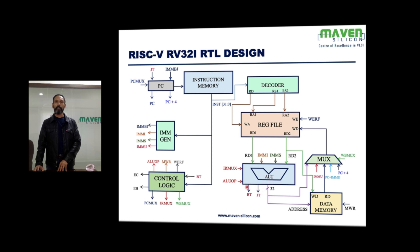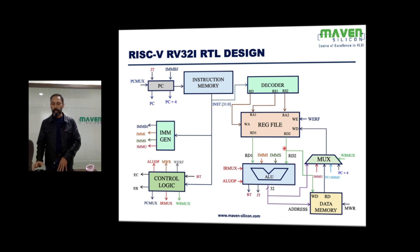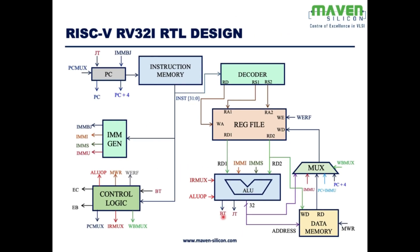The ALU produces different kinds of outputs. It produces a 32-bit value when performing operations between source registers RS1 and RS2, or between RS1 and an immediate value — in that case also a 32-bit value. But in the case of a branch instruction, the result is going to be boolean — a single bit, either true or false — so BT is always going to be true or false.